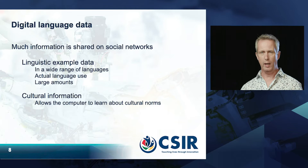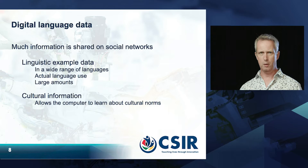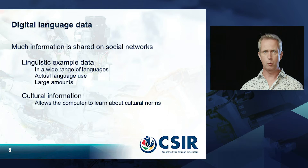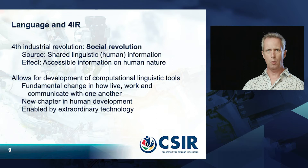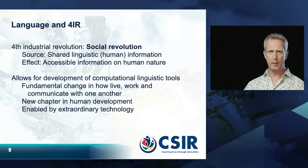Social networks show how people use language to communicate, and you can find this in huge amounts. Additionally, they provide not just language use but also cultural information — how do people communicate with each other? That information allows the computer to learn about cultural norms. The fourth industrial revolution could be seen as a social revolution, where the source is shared linguistic or human information found on social media, and the effect is accessible information on human nature.